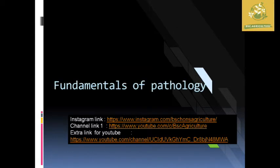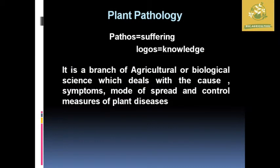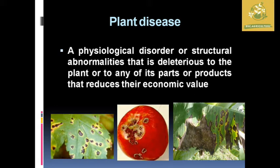In this video we are going to see the fundamentals of pathology. I am going to cover the definition of plant pathology as well as the history of plant pathology, which is our first lecture. The word 'pathos' means suffering and 'logos' means knowledge. So plant pathology is a branch of agriculture or biological science which deals with the cause, symptoms, mode of spread, and control measures of plant diseases.